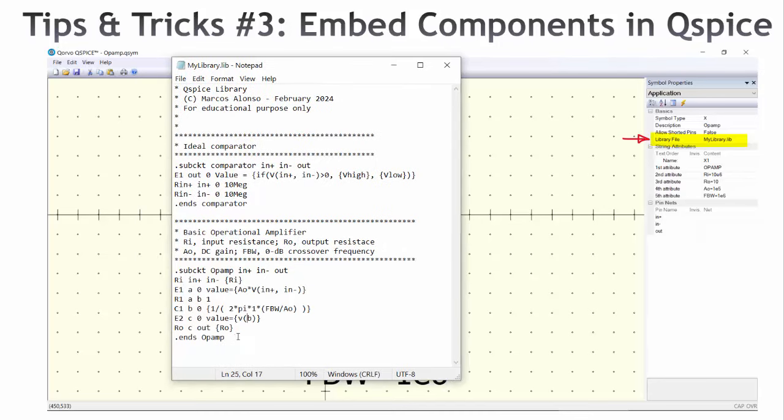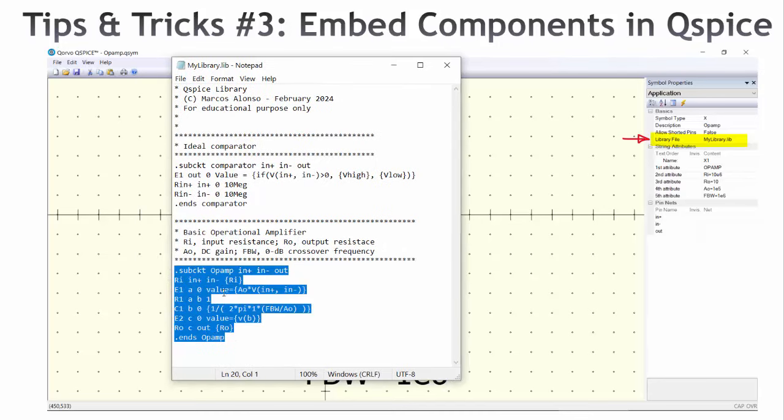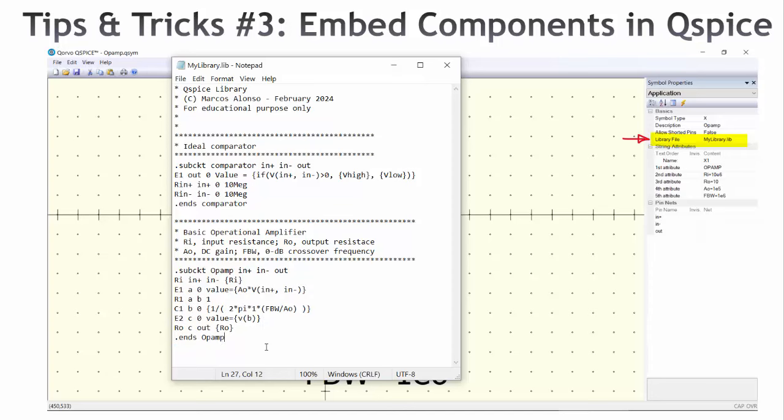For example, in this case we have this file and here we have the description of the operational amplifier. As we have seen in previous videos, we need to have this file together with our simulation file in order that everything works correctly.